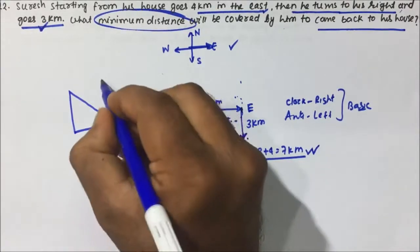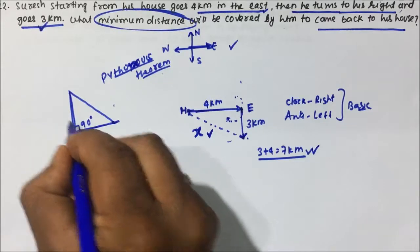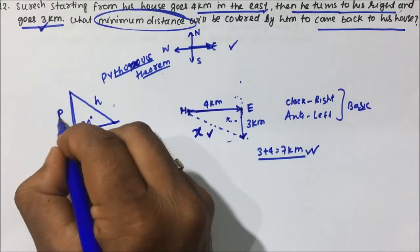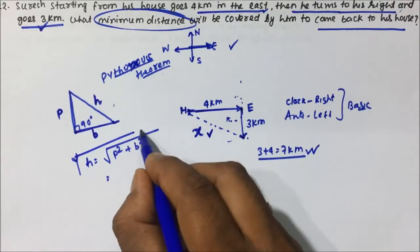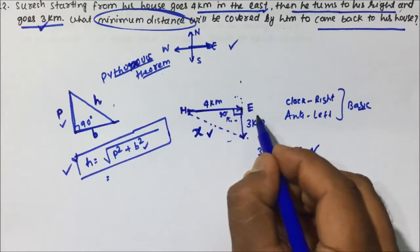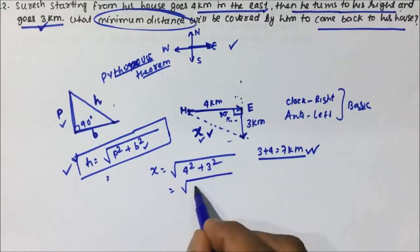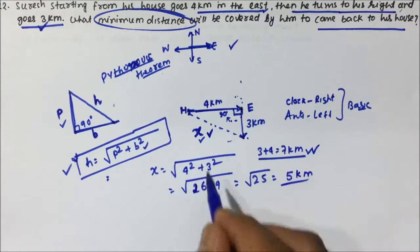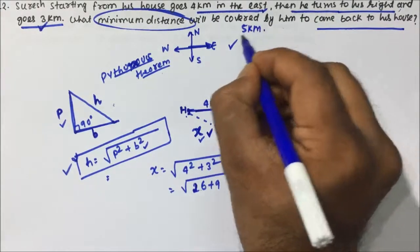To calculate the minimum distance, we use the Pythagorean theorem. When we have a right-angle triangle with base, perpendicular, and hypotenuse, the hypotenuse equals the square root of P² + B². This is also a right-angle triangle with a 90-degree angle. So x = √(4² + 3²) = √(16 + 9) = √25 = 5. Therefore Suresh has to travel 5 kilometers to reach back home, and that is the minimum distance.